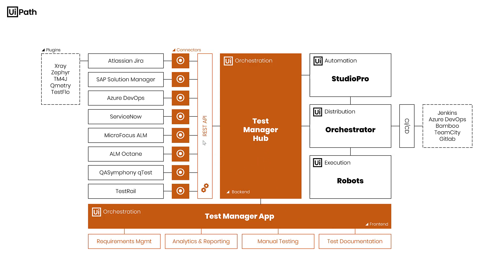The Test Manager Hub provides a REST API, and on top of that REST API we provide what we call a connector interface. This connector interface allows you to connect to various application lifecycle management tools such as Atlassian Jira, SAP Solution Manager, Azure DevOps, or ServiceNow. But on top of that, this connector interface also allows you to connect to your preferred test management system, such as Micro Focus ALM, ALM Octane, QSymphony QTest, or TestRail. And with version 20.4, we provide an out-of-the-box connector for Atlassian Jira.